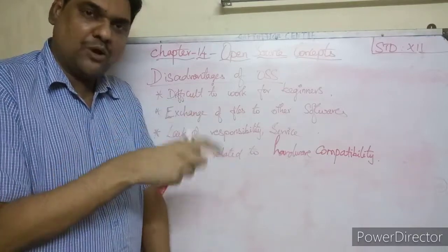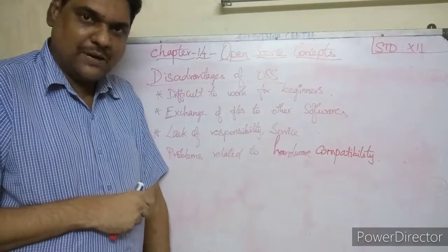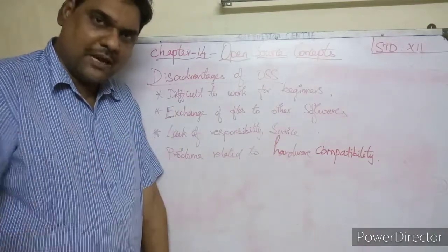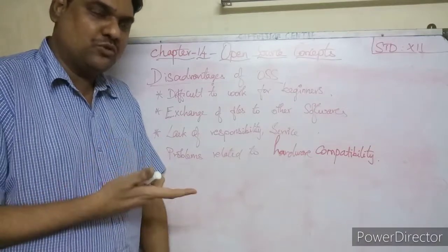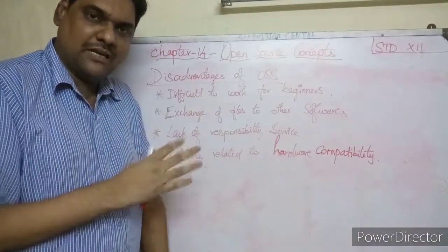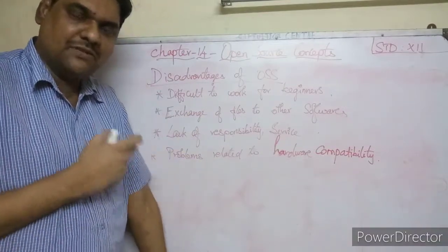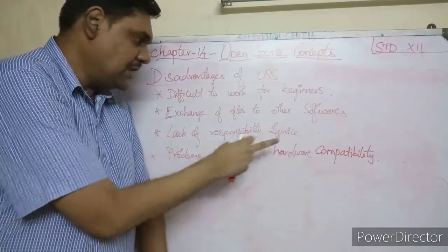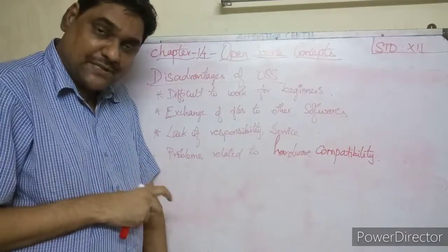The third disadvantage is the lack of responsibility and services. When maintaining OSS, if there is any problem in the software, you cannot always expect the author or owner to fix it. Since there are many members in the group, if you report a problem, it is not guaranteed someone will fix it promptly. So there is no clear responsibility or service guarantee.